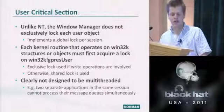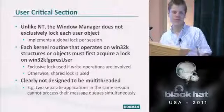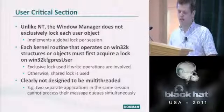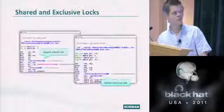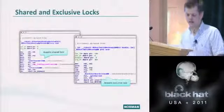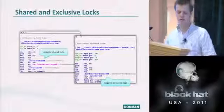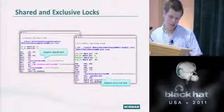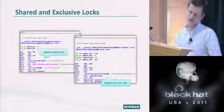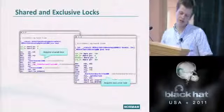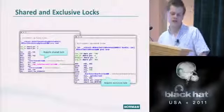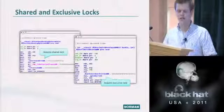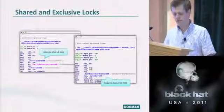A typical Win32K system call first acquires either a shared or exclusive lock. They use the term 'critical sections' — 'enter shared crit' means acquiring the shared lock, while 'enter user critical section' exclusively locks the section. We'll now see how user mode callbacks tie into this.